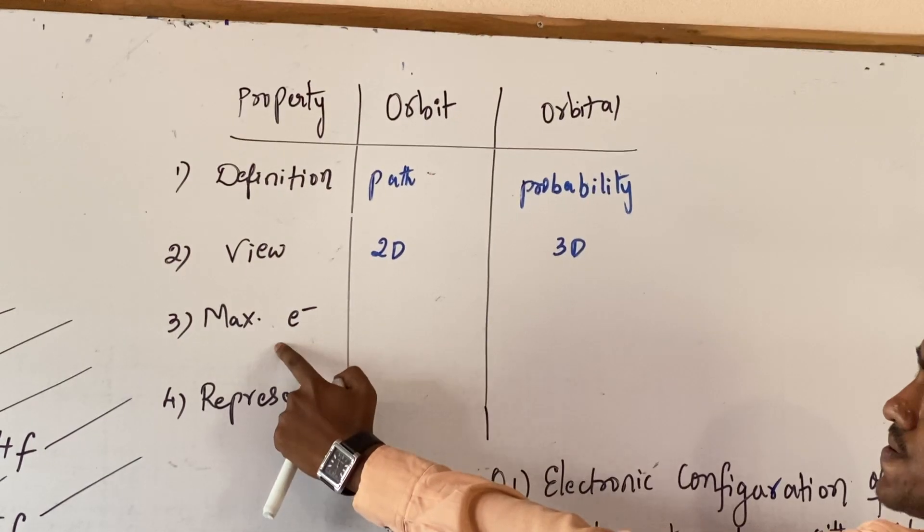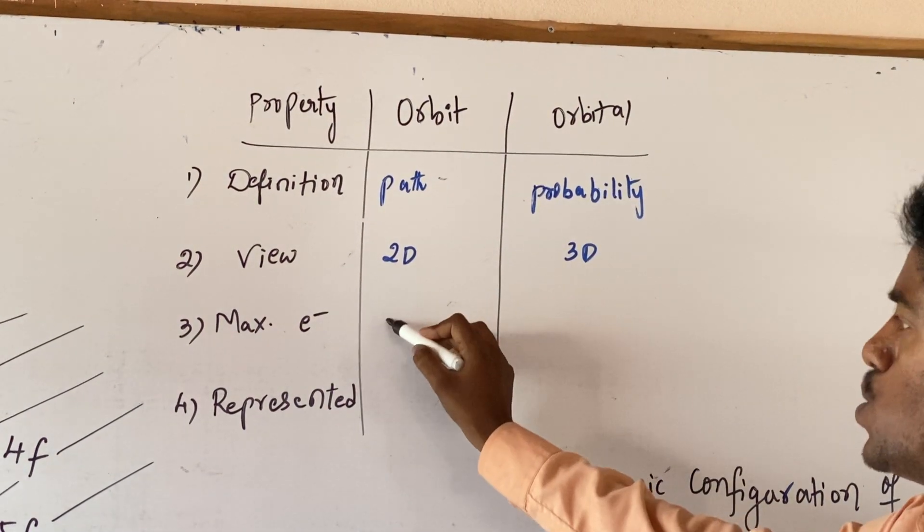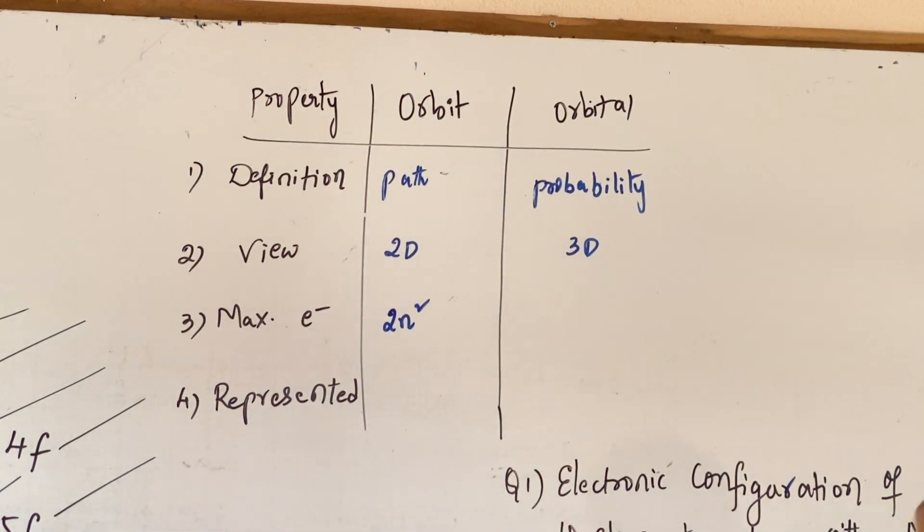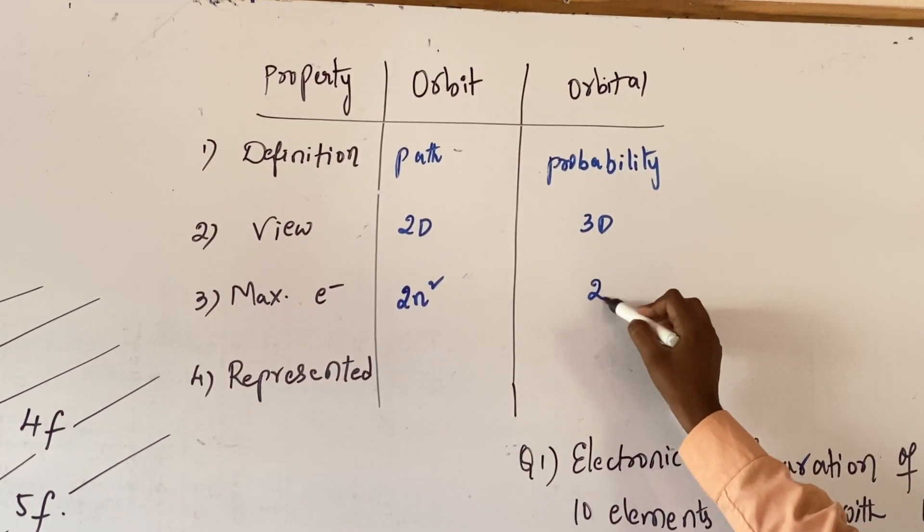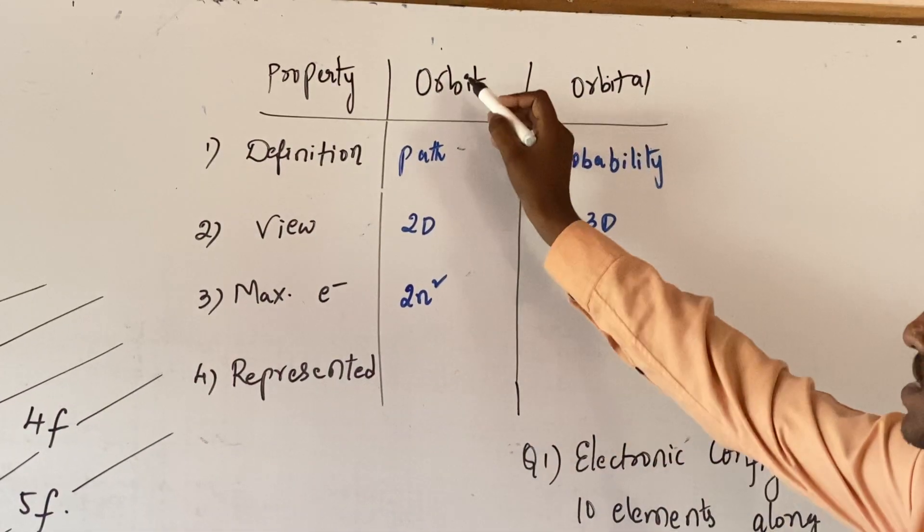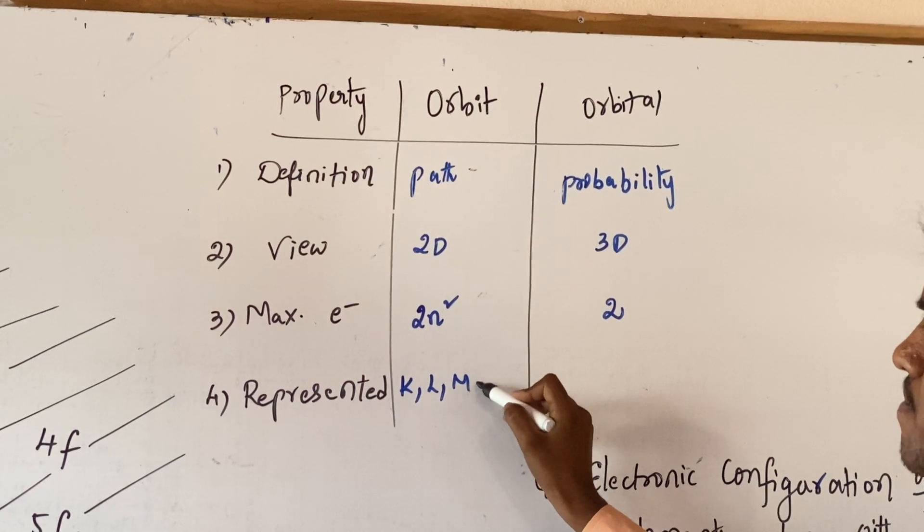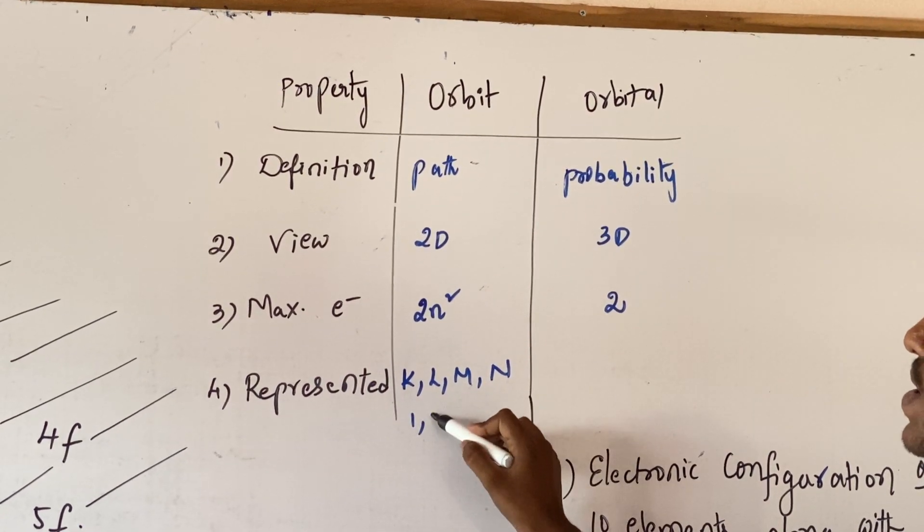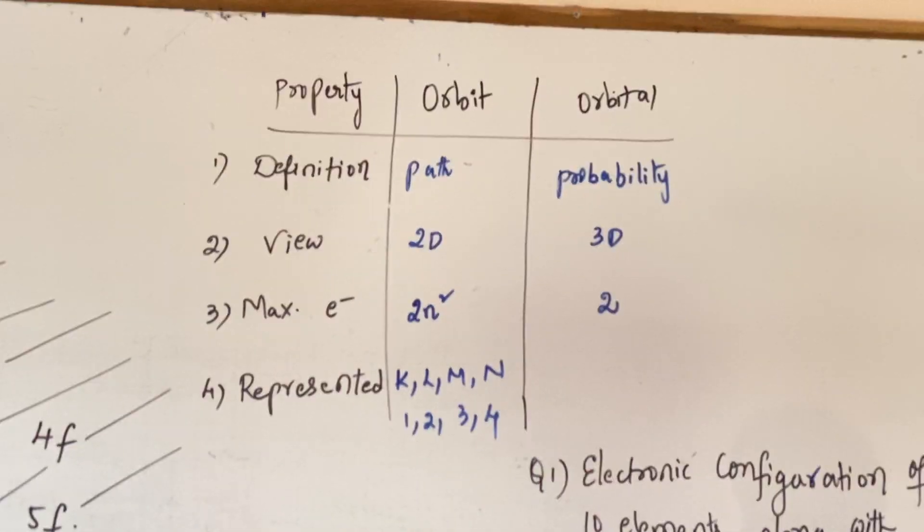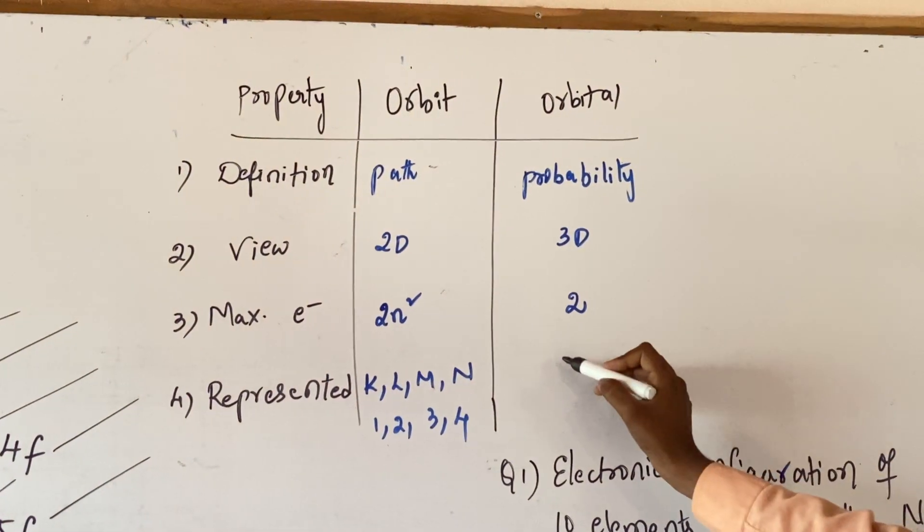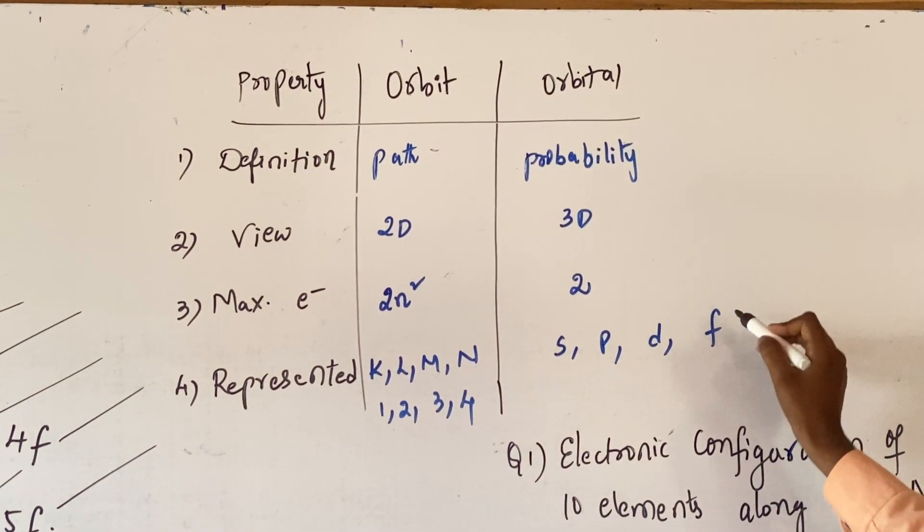The maximum number of electrons in an orbit is given by 2n squared. The maximum number of electrons in any orbital is 2. Actually, the orbit is represented by either K, L, M, N, or 1, 2, 3, 4, and so on. Now, the orbitals are represented by S, P, D, F.